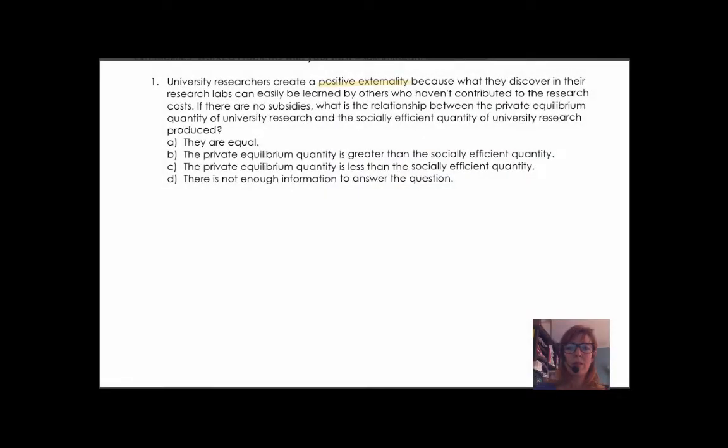Take a moment to read this. University researchers created a positive externality because what they discover in their research labs can easily be learned by others who haven't contributed to the research costs. If there are no subsidies, what is the relationship between the private equilibrium quantity of university research and the socially efficient quantity of university research produced?